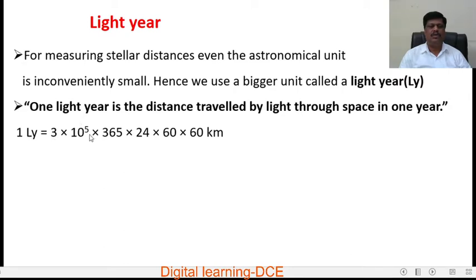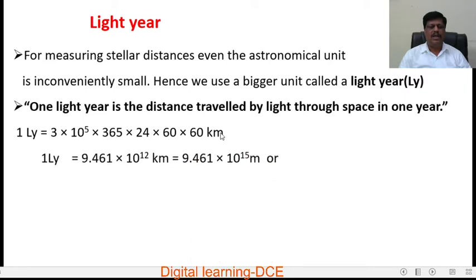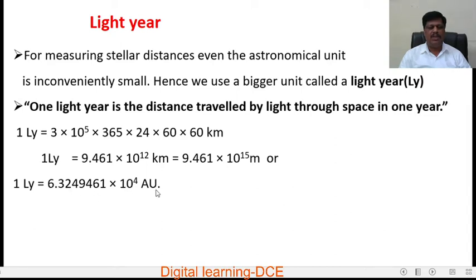Distance travelled equals velocity multiplied by time. The velocity of light is 3 × 10⁵ km/s, multiplied by one complete year — that is 365 days × 24 hours × 60 minutes × 60 seconds. The seconds cancel, giving distance in kilometers. After simplification, one light year equals 9.461 × 10¹² kilometers, which equals 9.461 × 10¹⁵ meters, or 6.3249461 × 10⁴ astronomical units.